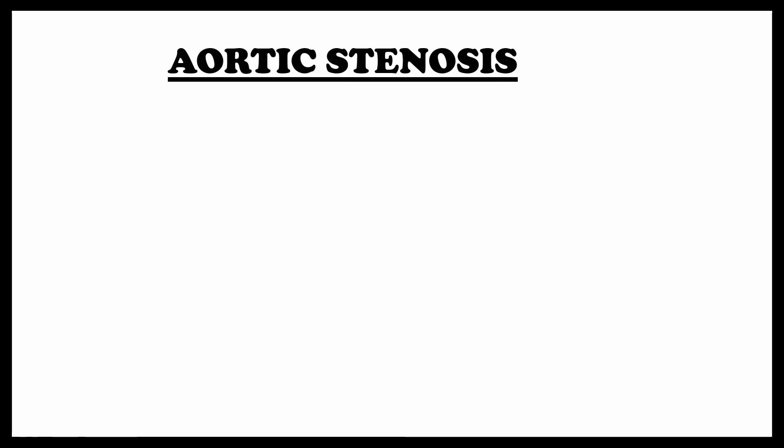Now let's talk about some pathology. Before that, you should remember the mnemonic A B C D. First comes A — aortic stenosis. Usually the aortic valve surface area is more than 2.5 centimeters, but if it is less than 2.5 centimeters it is called aortic stenosis.